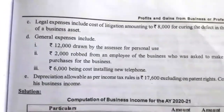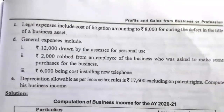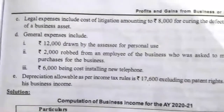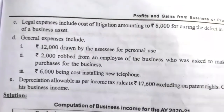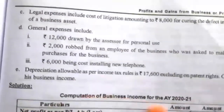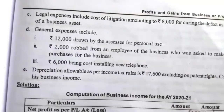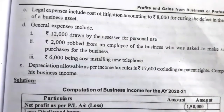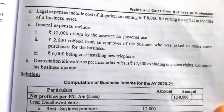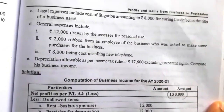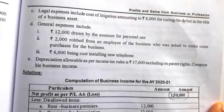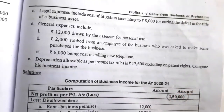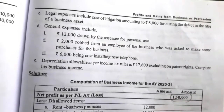Legal expenses incurred: cost of litigation amounting to rupees 8,000 for curing the defect in the title of a business asset. General expenses include rupees 12,000 drawn by SSC for personal use; rupees 2,000 robbed from an employee of the business who was asked to make purchases for the business; rupees 6,000 being cost of installing new telephone. Depreciation allowable as per Income Tax rules is rupees 17,600 excluding on patent rights. Compute his business income.